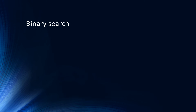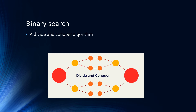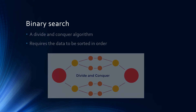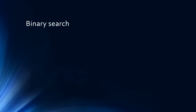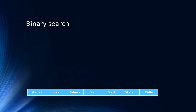The binary search is a divide and conquer algorithm and as such is far more efficient. However, it does require the data to be sorted in order before it can be used. To see how the binary search works, let's work through an example of doing a binary search for 'Mat' in the array below.